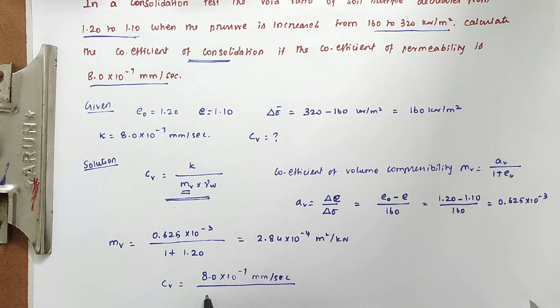Cv equals k, the coefficient of permeability given as 8.0 × 10^-7 mm per second, divided by mv × γw values 9.81. Solving this we got the value of 2.87 × 10^-7 meter square per second.